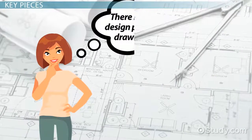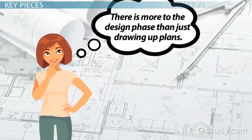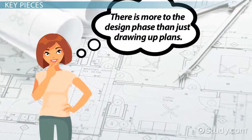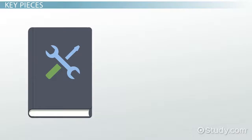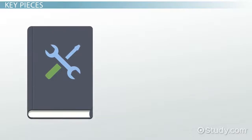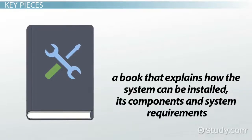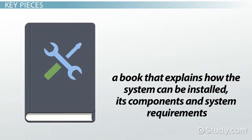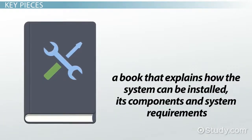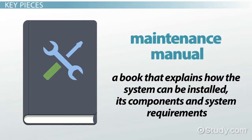All of the components and security pieces of the system are also determined during the Design Phase. Marge realizes that there is more to the Design Phase than just drawing up plans for the new system. First, along with the system, there needs to be a book that explains how the system can be installed, its components, and system requirements. This book is known as the Maintenance Manual.